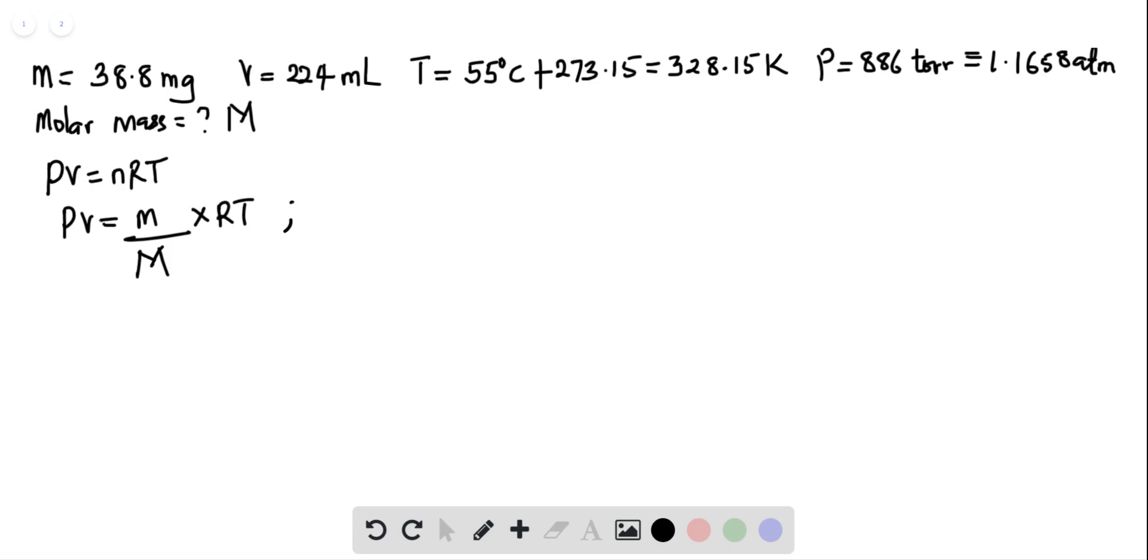So if we do that, M will equal mRT divided by PV. So let's go ahead and put all this into this equation.